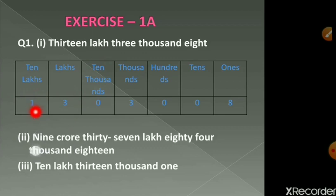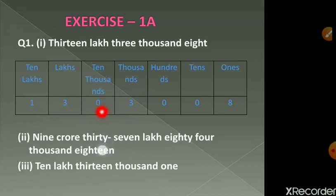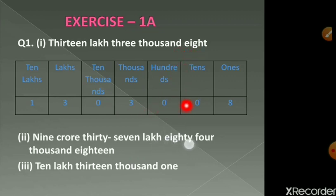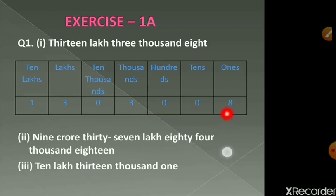Then for three thousand — ten thousand is not there, so we put a zero in the ten-thousands place and three in the thousands place. Then for eight — hundreds and tens places are missing, so we put zero zero in those two places and eight in the ones place. Hence we have got our number 13,03,008.